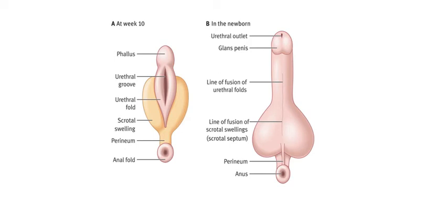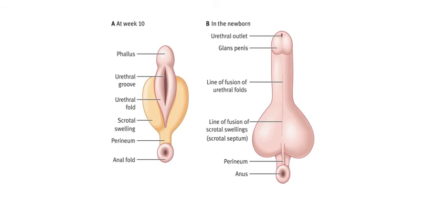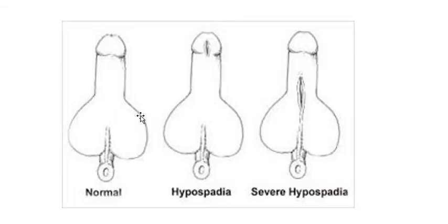A few words about the development of the urethra. The urethra develops from the urethral groove, which develops from the urogenital sinus. Two urethral folds are formed, and this urethral groove is enclosed by these urethral folds, leading to the formation of the urethra. This is the normal urethra, with the external meatus at the tip of the glans.